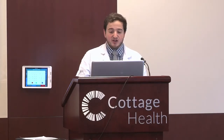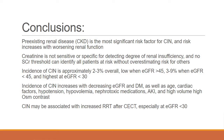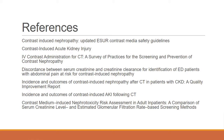In summary: pre-existing CKD is the most significant risk factor for CIN. Creatinine is not sensitive or specific for detecting degree of renal insufficiency, and no serum creatinine level can identify all patients at risk without overestimating risk for others. The incidence of CIN is about 2 to 3% overall — low when eGFR is greater than 45, 3 to 9% when less than 45, and highest when less than 30. CIN can be associated with increased dialysis after contrast-enhanced CT, especially in patients with an eGFR of less than 30.